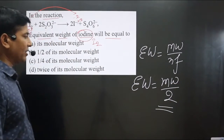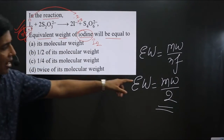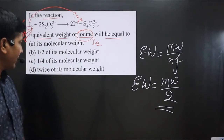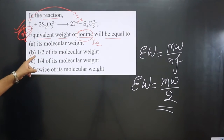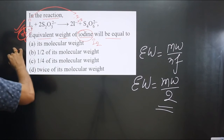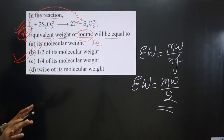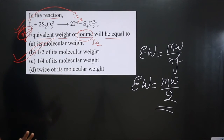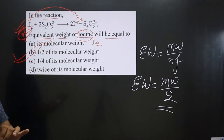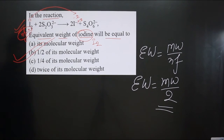The equivalent weight of iodine is half of its molecular weight. Looking at the options, option B — 'half of its molecular weight' — is correct. This is completely based on the n-factor concept; if you know how to calculate the n-factor value, you can answer this question very easily.